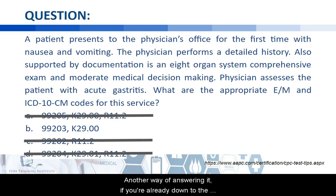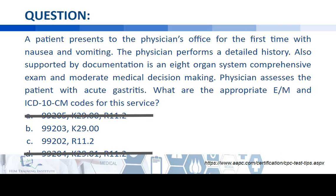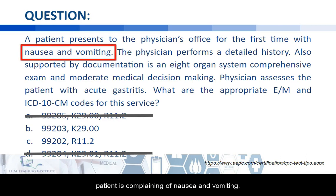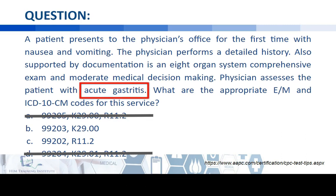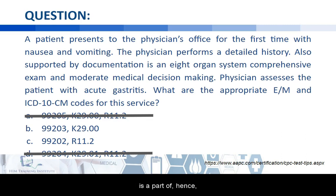Another way to confirm the answer: look at the ICD codes for Letter B and Letter C. The patient initially presented with nausea and vomiting — those are symptom codes, R11.2 to be exact. But towards the end of the question, a definitive diagnosis is given: acute gastritis, which is a K-code. Under ICD-10 rules, an integral symptom is dropped in favor of the definitive diagnosis of which it is a part. Hence, the best answer is the one with K29.00, confirming Letter B.